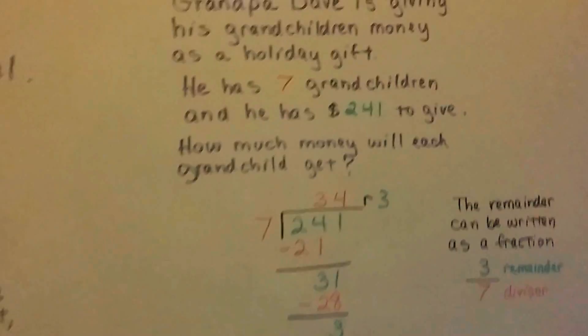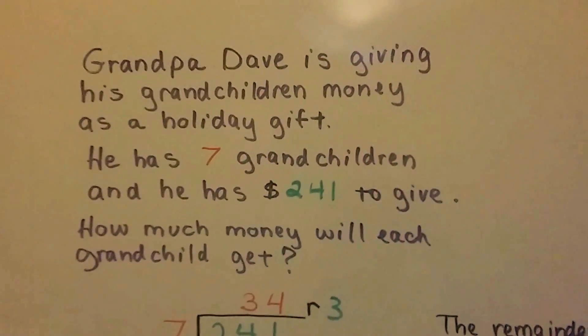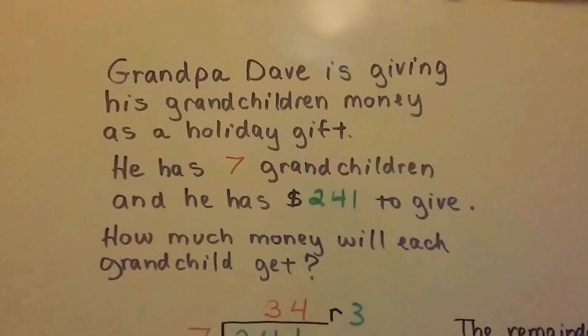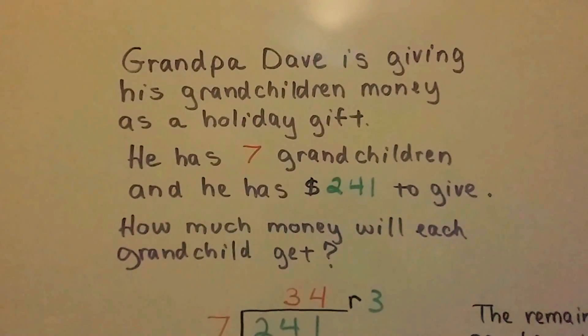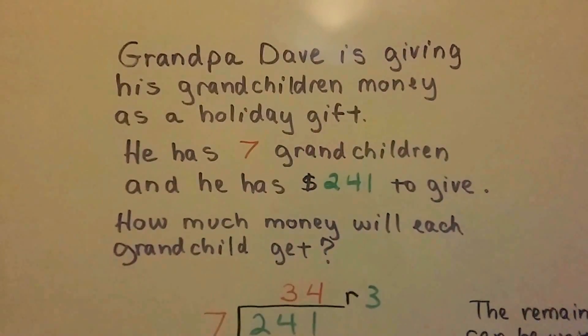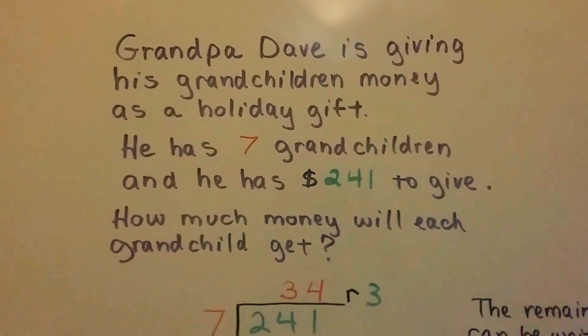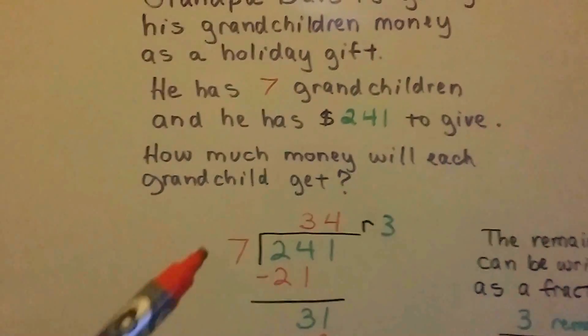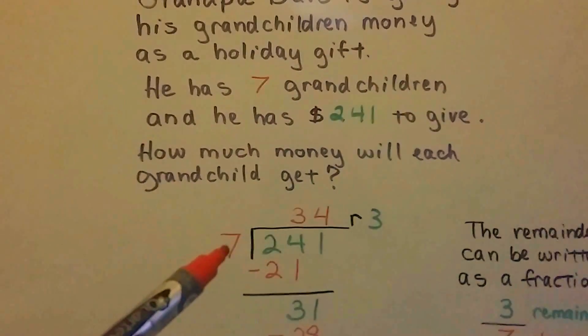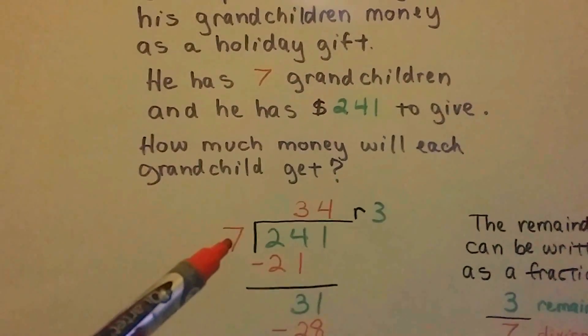Okay, let's look at this one. Grandpa Dave is giving away money. Grandpa Dave is giving his grandchildren money as a holiday gift. And he has 7 grandchildren, and he has $241 to give. So, how much money will each grandchild get? So, the 241 is going to be our dividend. The 7 grandchildren is going to be our divisor.